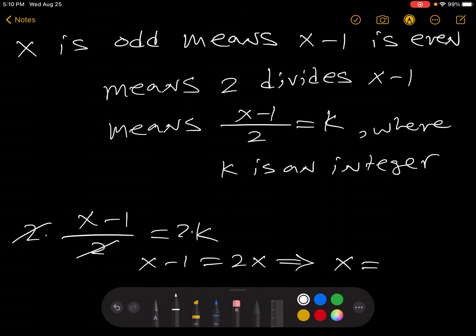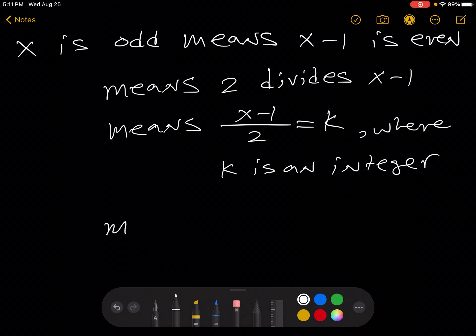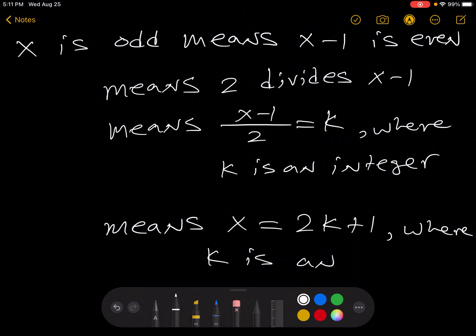Which tells us that x equals 2k plus 1. So that's the math that I would do to say this means the same as x equals 2k plus 1, where k is an integer.